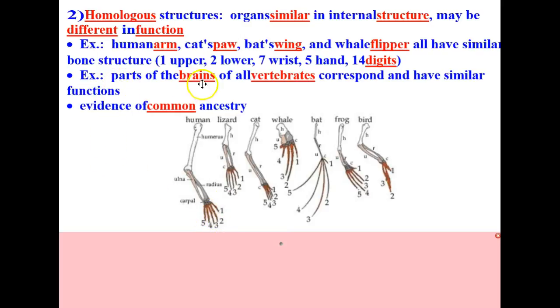Another example are parts of the brains of all vertebrates, which correspond and have similar functions. Scientists believe homologous structures gives credibility to evolution because it provides evidence of common ancestry.